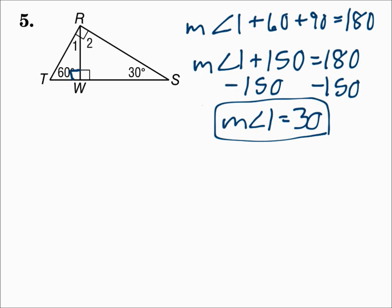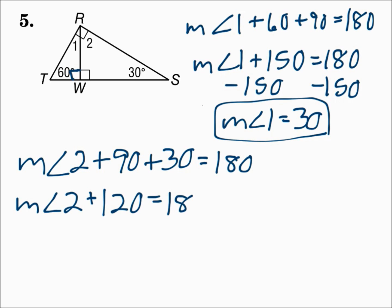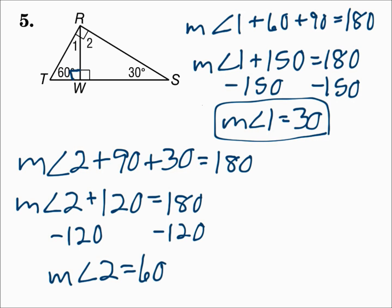Now for angle two — you know two angles, so use the triangle angle sum theorem: angle two + 90 + 30 = 180. 90 + 30 = 120, so subtracting 120 from each side gives angle two = 60. The triangle angle sum theorem says the three angles of a triangle add up to 180.